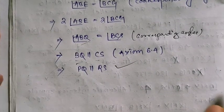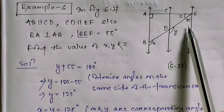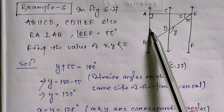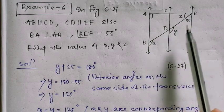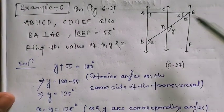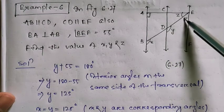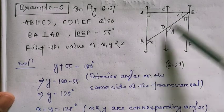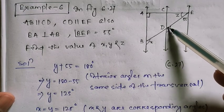Example 6: Given AB parallel to CD, CD parallel to EF, EA perpendicular to AB (so this angle is 90 degrees), and one angle is 55 degrees. We need to find the values of X, Y, and Z. Since AB is parallel to CD and CD is parallel to EF, by Theorem 6.6, AB is parallel to EF. With CD parallel to EF as the transversal, the co-interior angles apply.